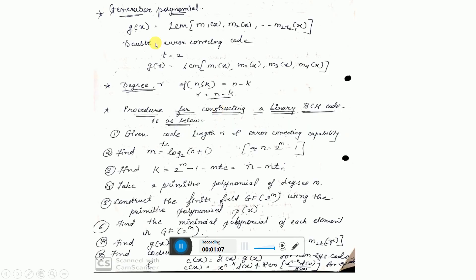To calculate the generator polynomial: G(X) = LCM of M1(X), M2(X), up to M(2T_C - 1)(X). The degree of the generator polynomial is given as R = N minus K. Remember this.